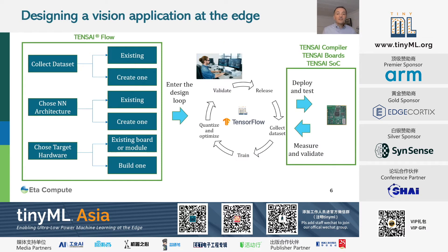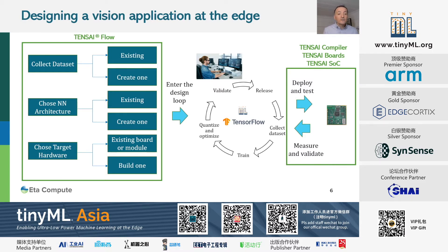This figure illustrates the process in developing an embedded vision application at the edge. First, you need a dataset that is related to your use case — it may be an existing one, or you may have to create one. Then you need to choose a neural network architecture — again, it can be an existing one, or you have to create your own model. And then you need to choose your target hardware — you have to decide if you want to use existing modules and boards, or if you want to develop your own board.